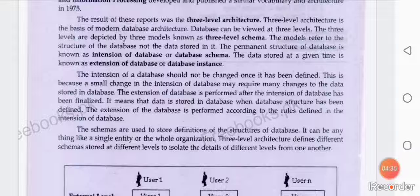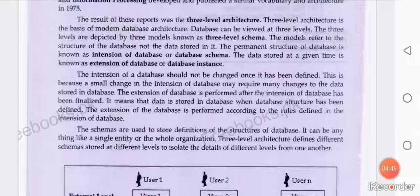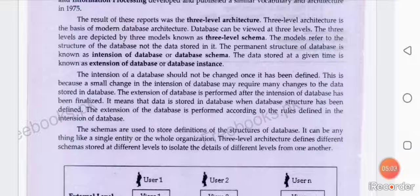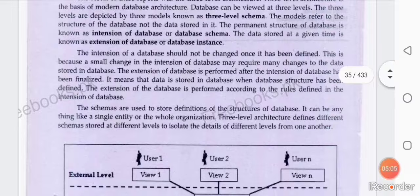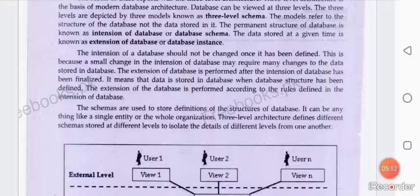Schemas are used to store definitions of the structure of a database. It can be anything — a single entity or a whole organization's data, whether small or large. That data, when saved, will follow the rules — it will follow the intension and its structure. Three-level architecture defines different schemas stored at different levels to isolate the details of different levels from one another.